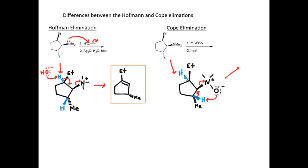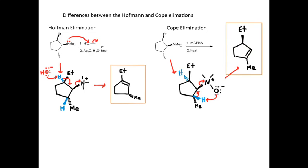The product we get here is again a five-membered ring. Our alkene is now here, so we've lost the stereochemistry for the carbon attached to our methyl group. Our nitrogen is gone, and the stereochemistry of our ethyl group remains untouched. That's the final product we get in this example doing the Cope elimination.